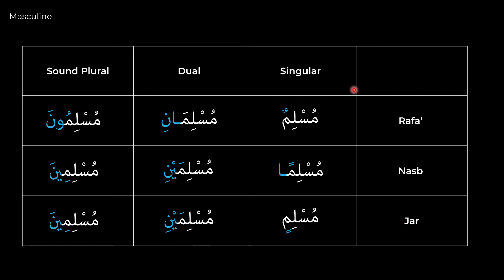So for the masculine ism the full chart reads: muslimun, muslimani, muslimuna — musliman, muslimaini, muslimina — muslimin, muslimaini, muslimina. Memorizing this chart will save you a lot of time. It's a quick reference to tell you, when you see a word, what its state is, what its number is, and what its gender is. So it's really helpful to get this down.